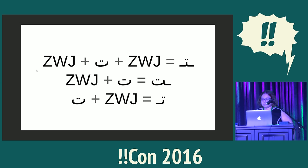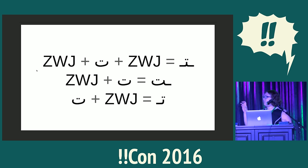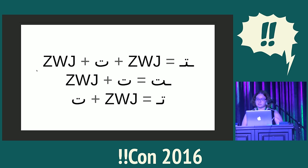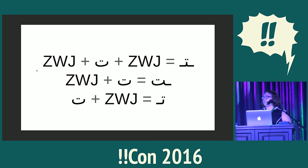Arabic letters should have properties specified that join them together when they're in words anyway, but you can force them into a joined form even if they're not next to one of those joining letters, such as in this slide. You can see zero-width joiners and a character that's in one form, and then on the other side of the equal sign, it's in another form. Arabic is typically read right to left, but this slide you can read left to right because I speak English.